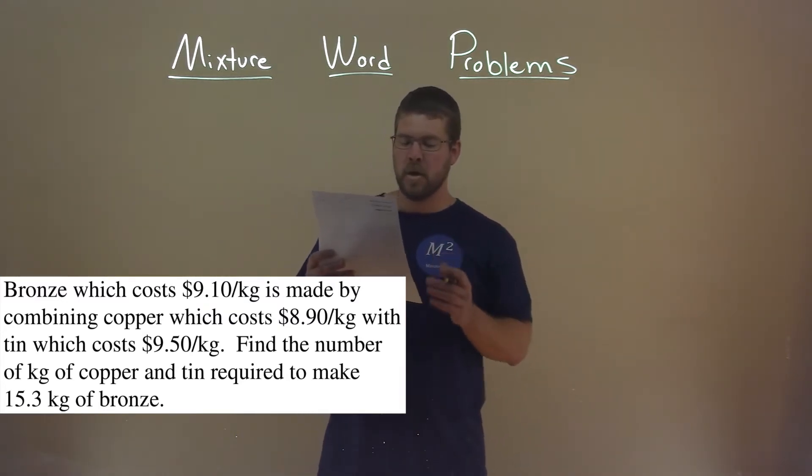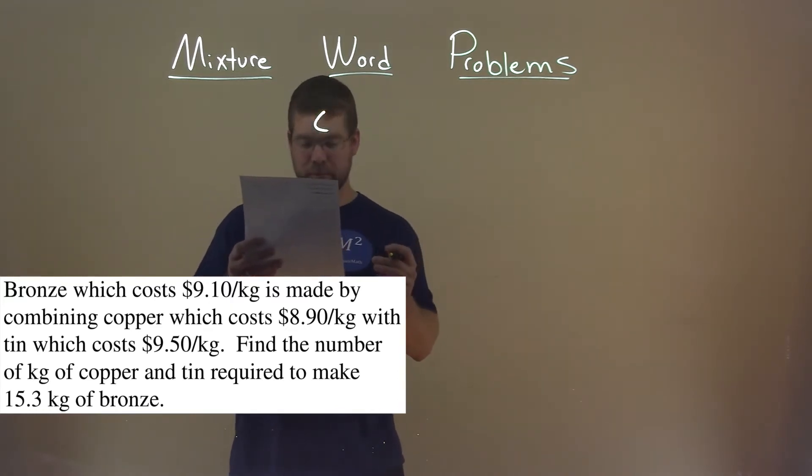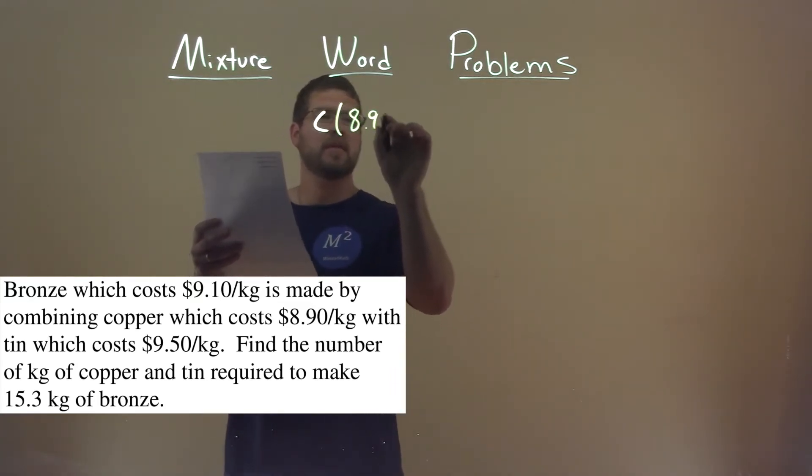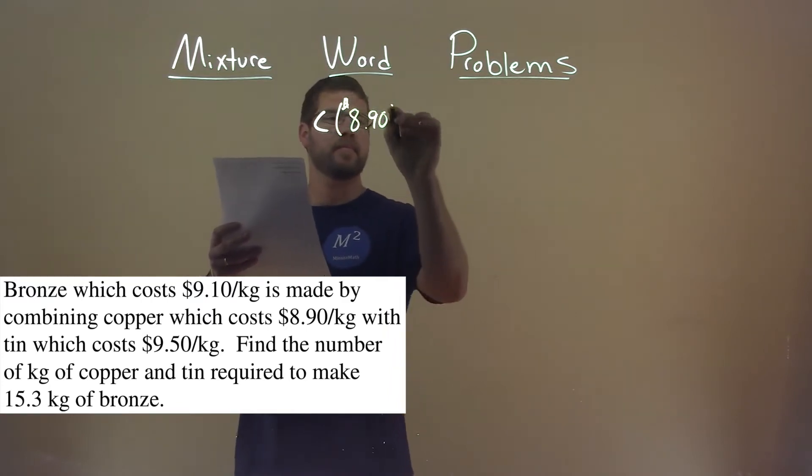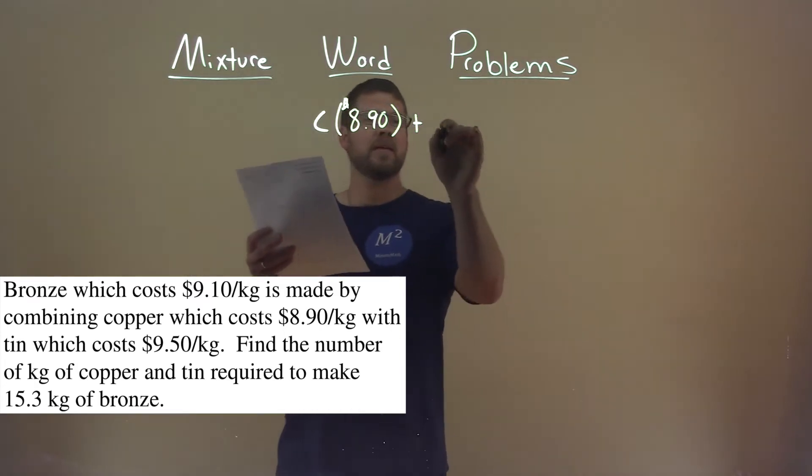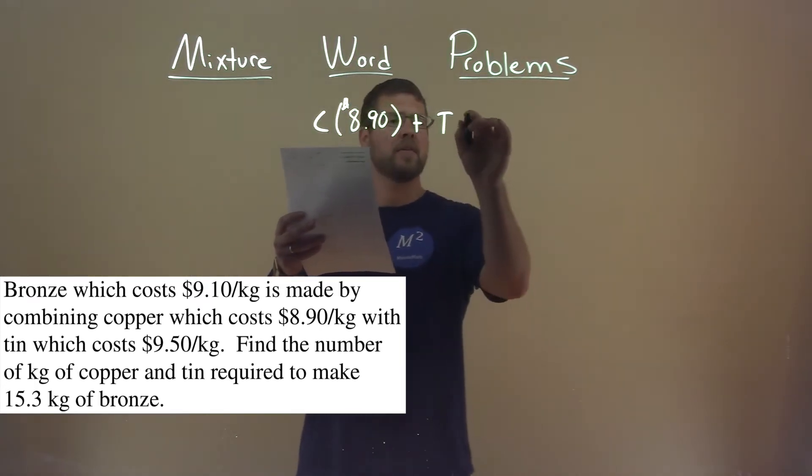Okay, so let's let C represent the amount of kilograms of copper. They tell us copper here costs $8.90 per kilogram, so we have $8.90 here. And copper is combined with tin, which again, we don't know the amount of kilograms of tin, but tin costs $9.50.